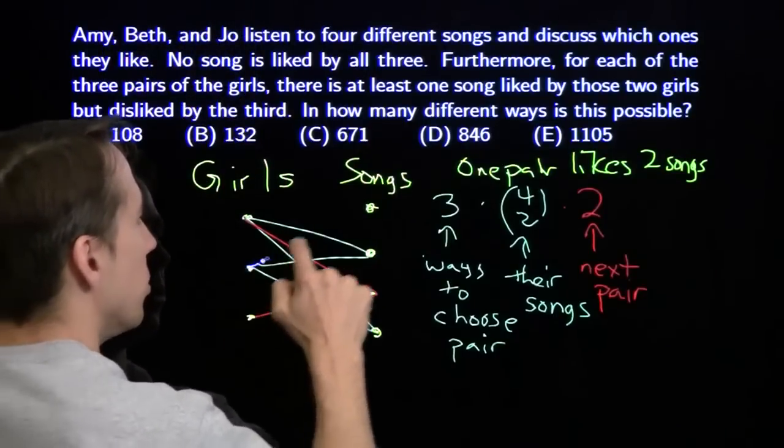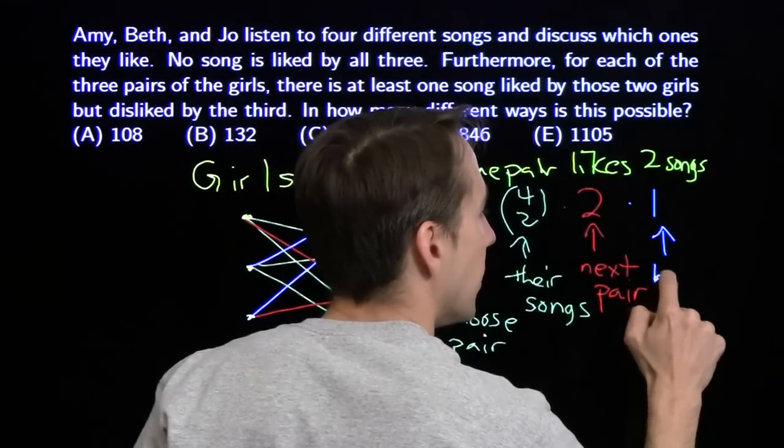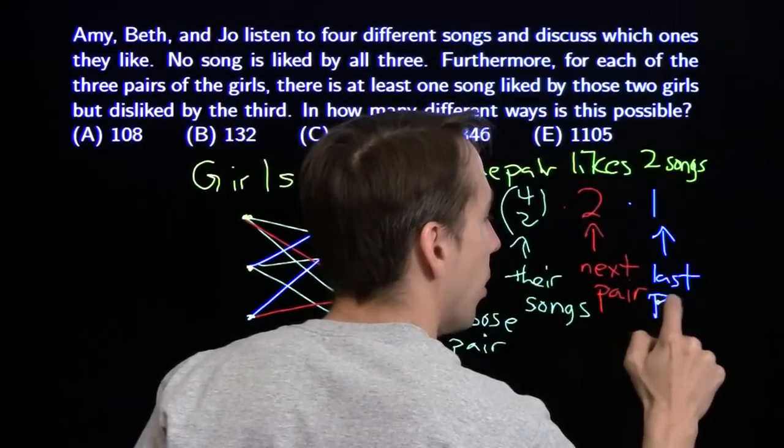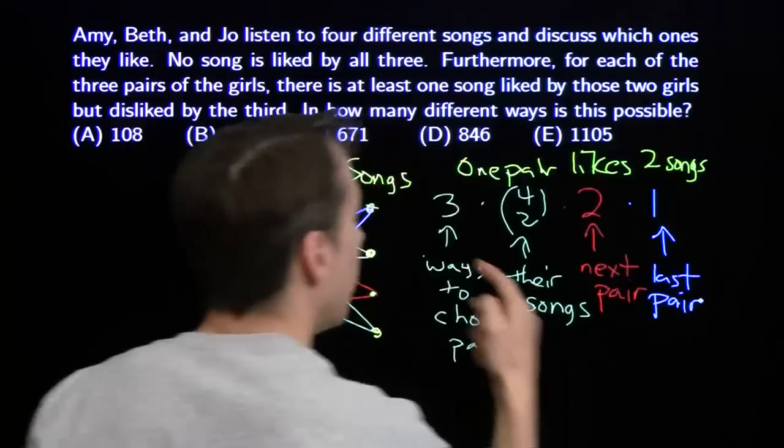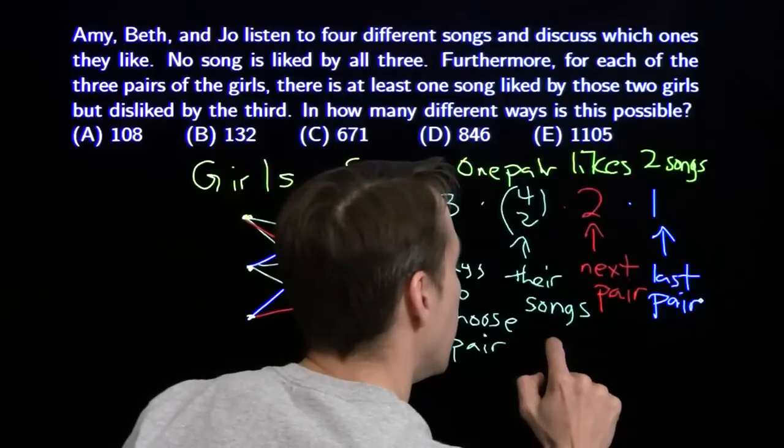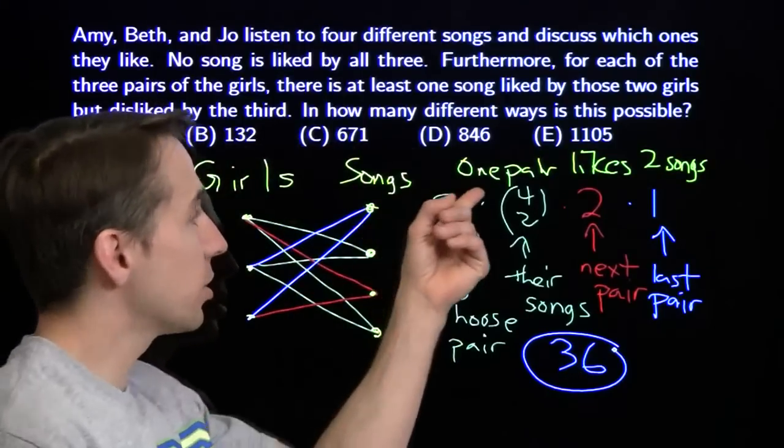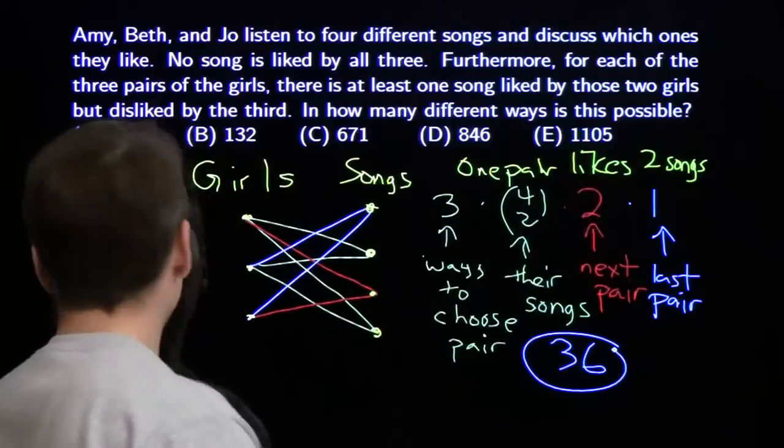So the remaining pair, that's these two, gets the last song. And then we just multiply this out. Three, four choose two is six. Three times six is 18, times two is 36. So there are 36 ways the girls can like their songs if there's one pair that likes two songs.